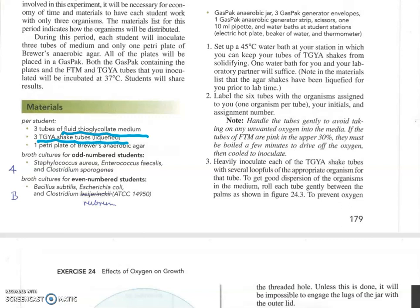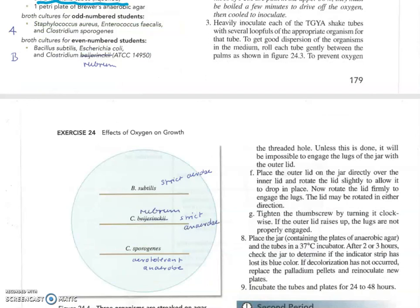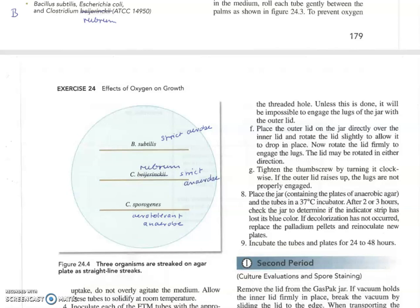So whichever set of three bacteria you would have been assigned to, you would have taken those three bacteria and inoculate three tubes of FTM medium, the liquid one. Then three TGYA shake tubes with those three that you were assigned to. And then on the single Petri plate that you should have used, you would have made three rows of bacteria. So let's say you would have been assigned to group B bacteria, then you would have plated Bacillus subtilis one row right here, E.coli, that should have been the middle row then, and Clostridium rubrum, that would have been the third row here.